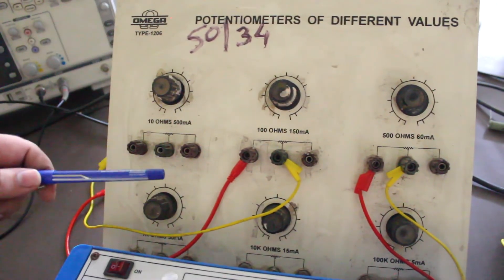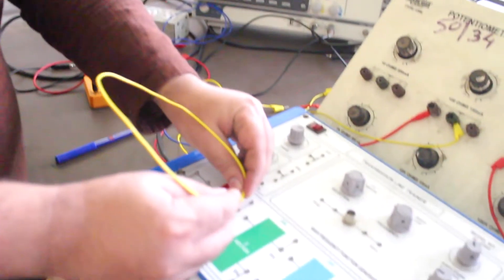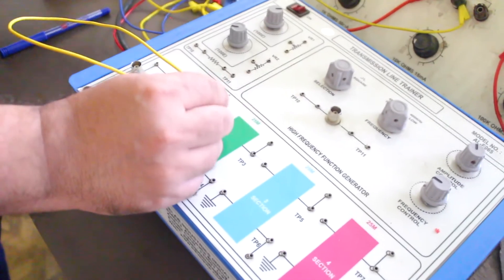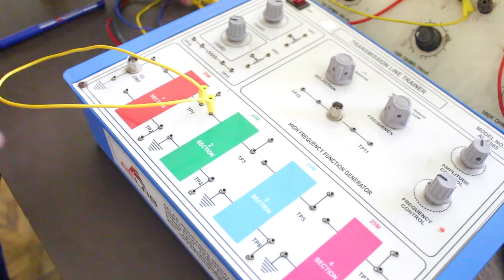For this practical in which we are going to calculate the characteristic impedance, we are going to use the whole length, 100 meter. So we are going to connect all the sections of 25 meters each and will make it a single 100 meter wire.